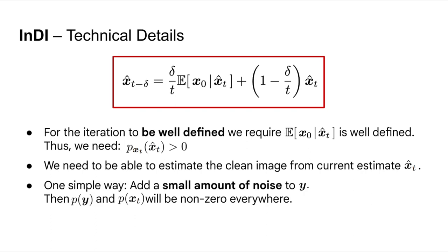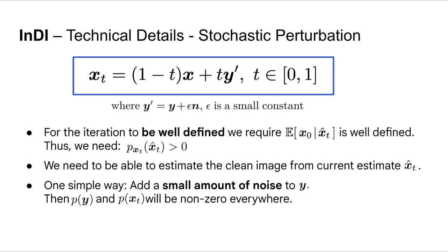One simple way of guaranteeing this is by adding very little noise to the input y. Then all the probability density functions will be supported in the whole space. This is a standard trick for regularizing distributions.